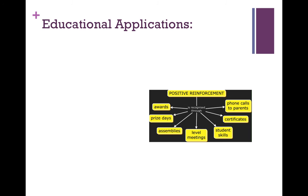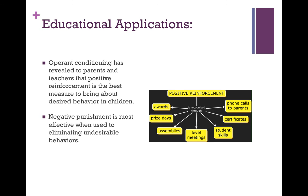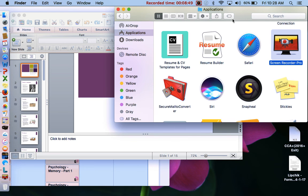There are educational applications for the operant conditioning discoveries. Operant conditioning has revealed to parents and teachers that positive reinforcement is the best measure to bring about desired behavior in children. Negative punishment is most effective when the desire is to eliminate inappropriate behaviors. And that concludes our discussion. Thank you for attending and I look forward to seeing you in the live lessons. Have a great day.